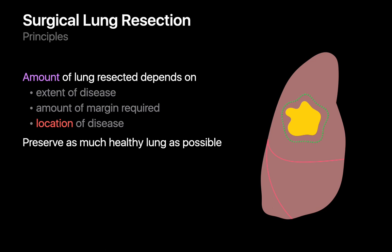The same cancer in the right upper lobe, if situated across a fissure, may require two lobes to be resected instead of just one. These considerations are balanced by the need to preserve as much healthy lung as possible. Folks with lung cancer often have substantial emphysema and require as much functional lung tissue for gas exchange as possible.